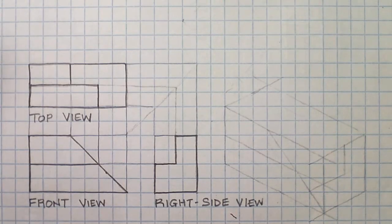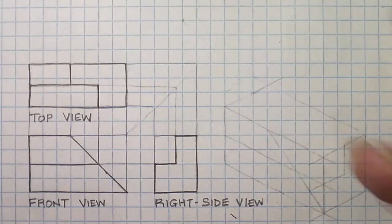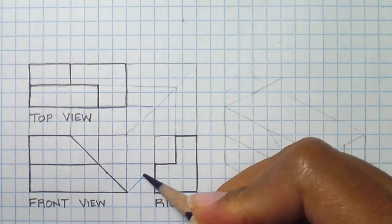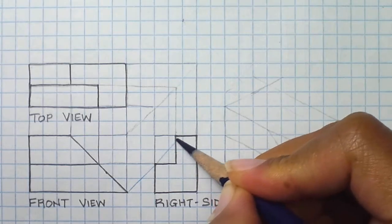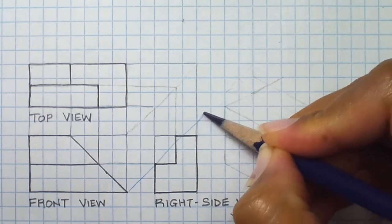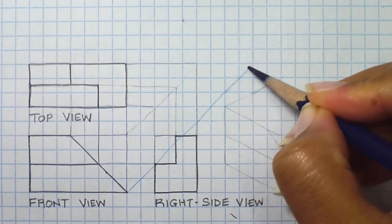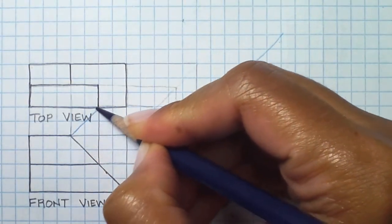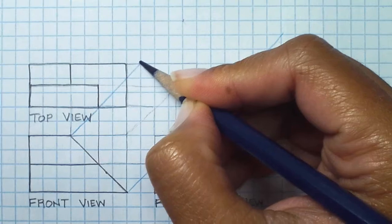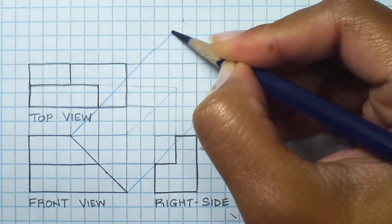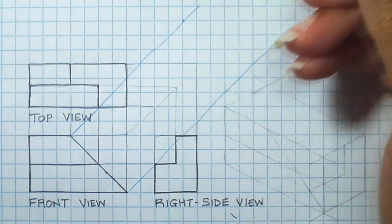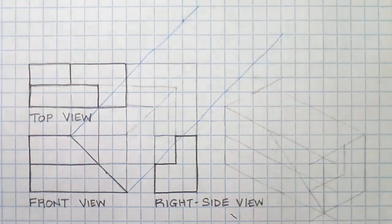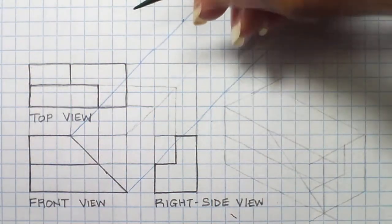project 90 degree lines or be perpendicular from our surface. So let's do that and I'm going to go further out so I know I've passed both my views that I have drawn. And then I'm going to place my auxiliary